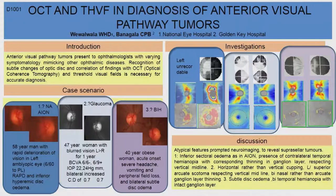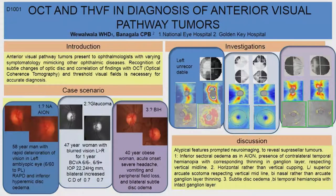Looking at the RNFL, which you see in the middle part of the OCT picture, there is thickening of RNFL, and on the other unaffected side also there is thinning. Because of that, we ordered neuroimaging, and that showed a glioblastoma.